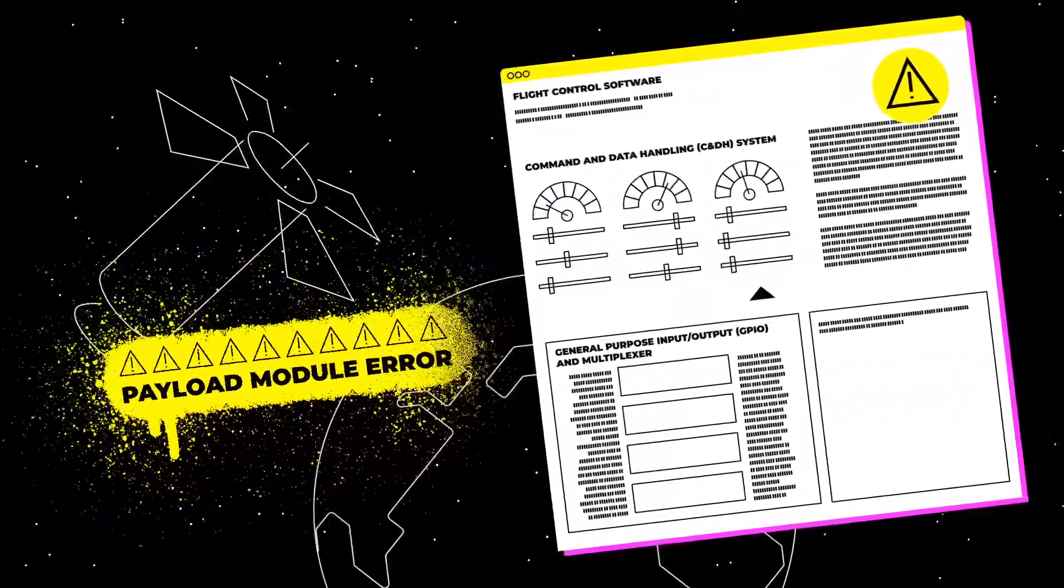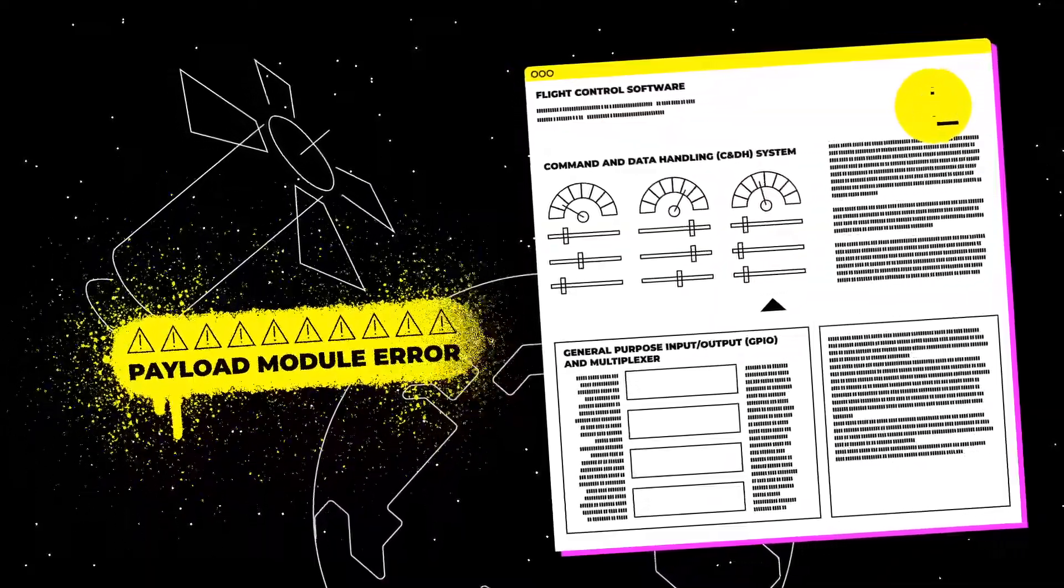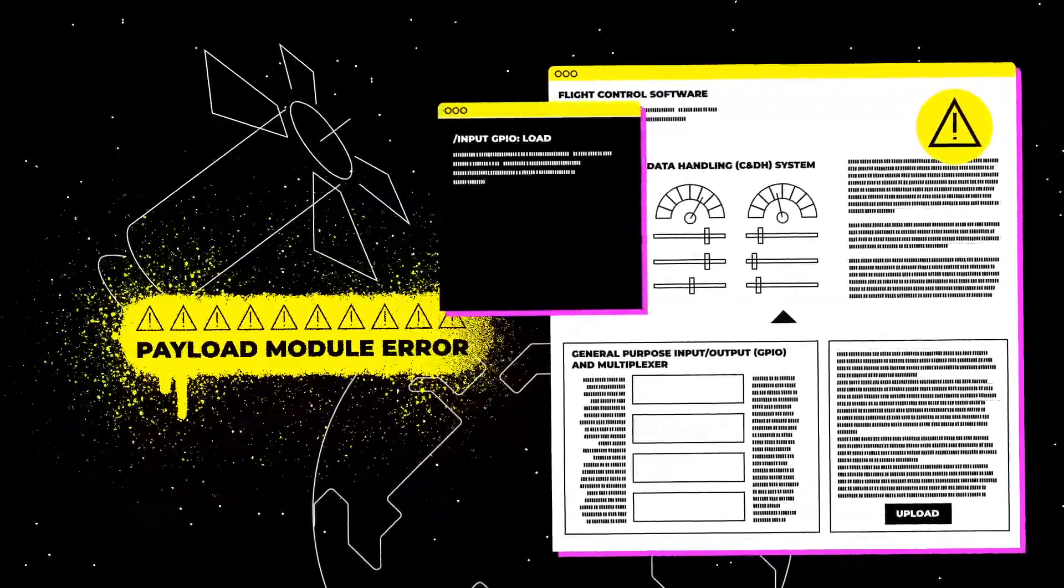The teams must write a custom flight software application that can control the GPIO and enable access to the payload system console. After writing the application, the teams must upload it to the C&DH and execute it.